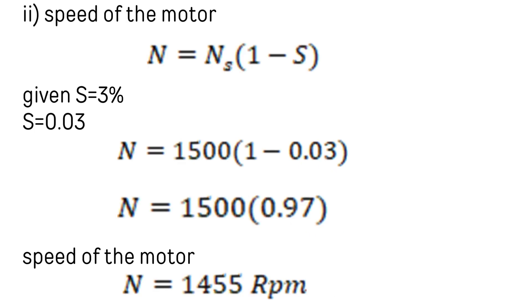To find the speed of the motor when slip is 3%, the formula is N = Ns × (1 - s). Given slip s = 3% = 0.03, substituting: N = 1500 × (1 - 0.03) = 1500 × 0.97, which gives N = 1455 rpm. This is the speed of the rotor for a slip of 3%.